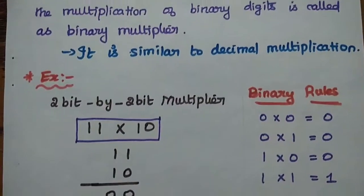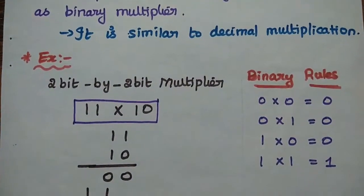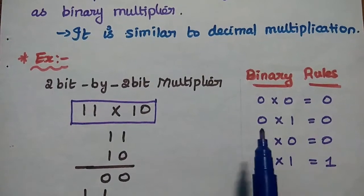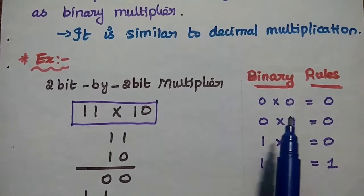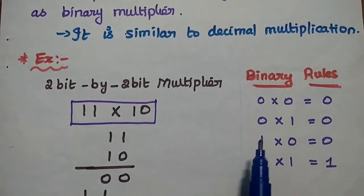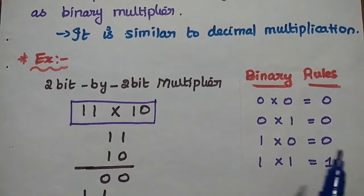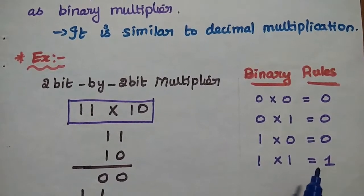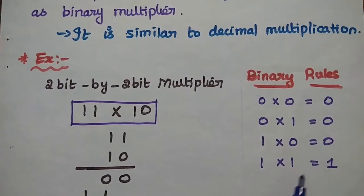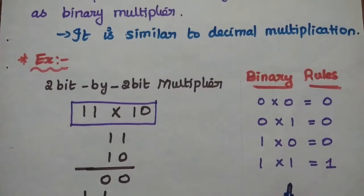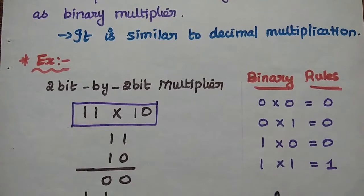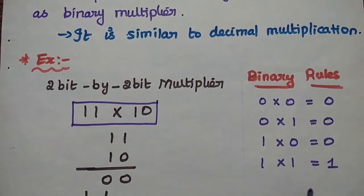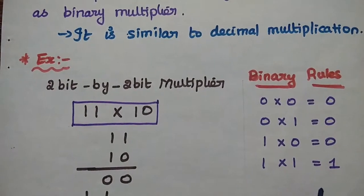The binary rules for multiplication are: 0×0 is 0, 0×1 is 0, 1×0 is 0, and 1×1 is 1. As we know, anything multiplied with 0 is always 0.